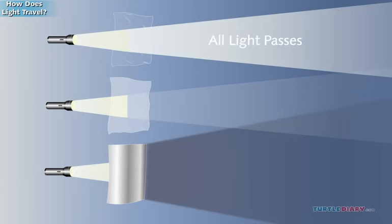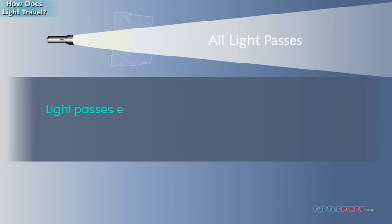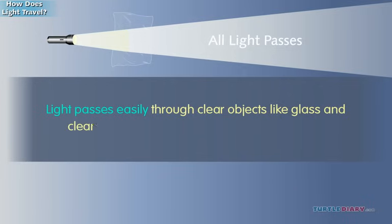The light would pass directly through the plastic wrap. Light passes easily through clear objects like glass and clear plastic. We call these objects transparent.